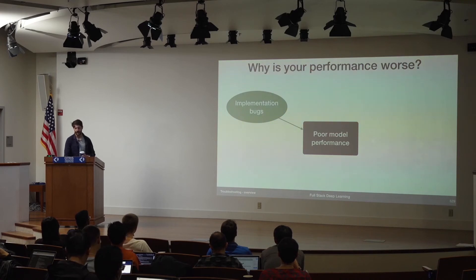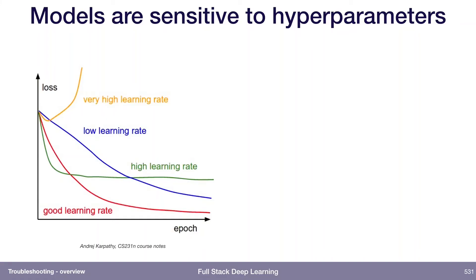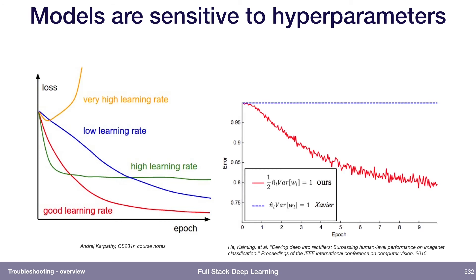Implementation bugs are particularly bad, but hyperparameter choices can also cause your performance to degrade. Models in deep learning are very sensitive to hyperparameters. Learning rate is a big example — it's very obvious if your learning rate is too high, sometimes your loss actually goes up, but it can be more subtle as well. This shows learning curves from the ResNet paper, illustrating the difference between using their custom weight initialization versus the standard one. With the standard weight initialization, the model doesn't learn at all. Very subtle choices can make a big difference.